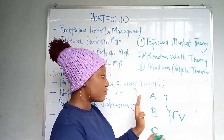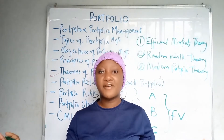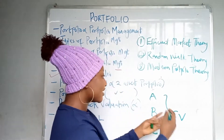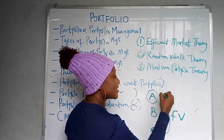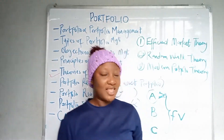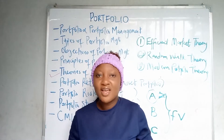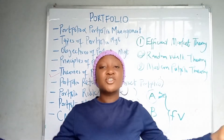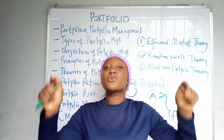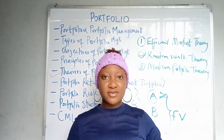Under the efficient market theory, you as an investor cannot outperform the market or earn more returns than another investor simply because you have special information. The market is efficient because it gives everybody the same information, and stocks trade at their fair value. You cannot sell at an inflated price, nor can you buy undervalued stocks — wherever a stock is trading at 20 naira, it trades at 20 naira everywhere.